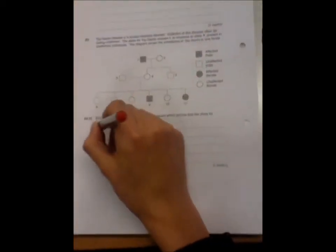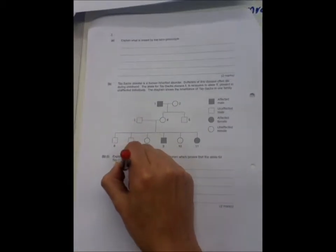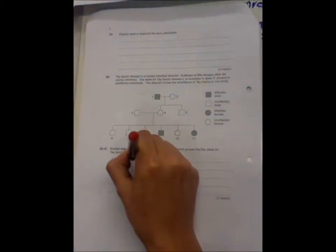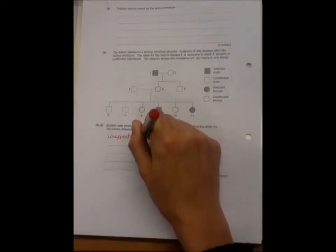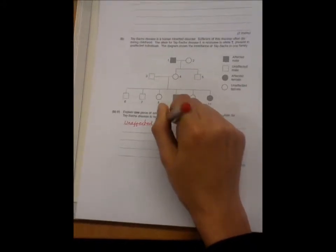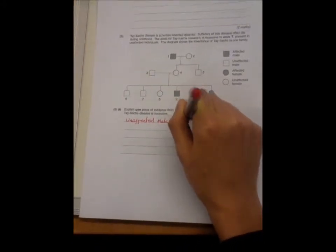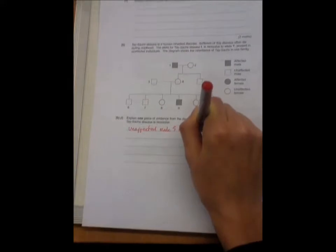So, using the evidence, you can say unaffected male 3 and unaffected female 4.